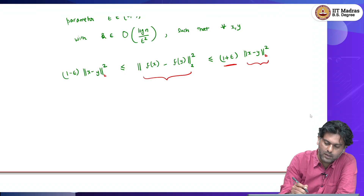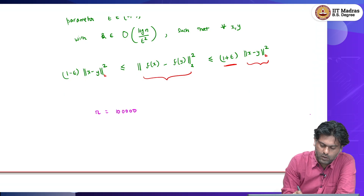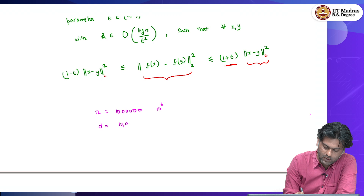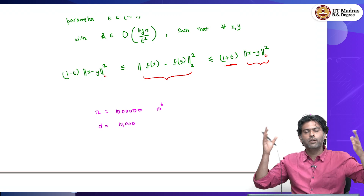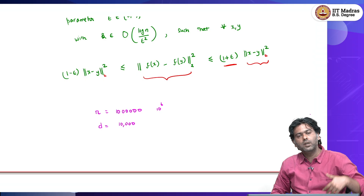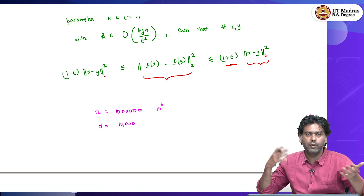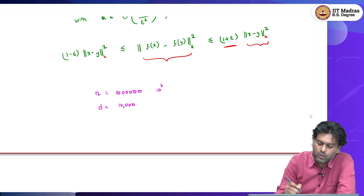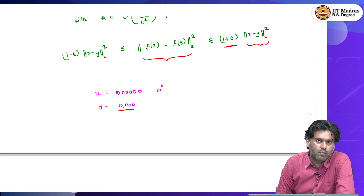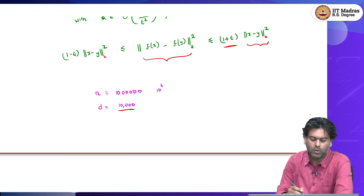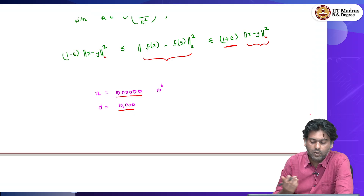To give a sense of numbers: let us say we have 10^6 data points, and all these data points are in some 10,000-dimensional space. You can think of these as word embeddings in a deep neural network, where there are 10^6 words and each word gets a 10,000-dimensional feature map. After you learn a deep network or an NLP-based network, if you have a downstream task that uses pairwise distances between any two of these 10^6 points in 10,000 dimensions...